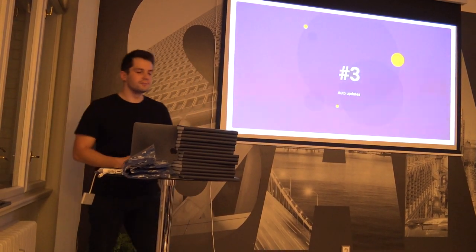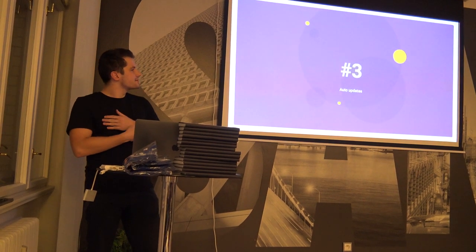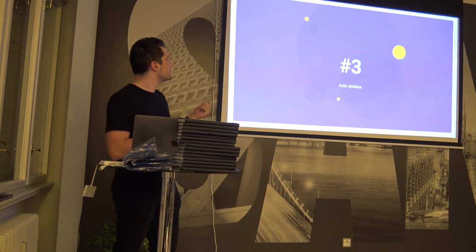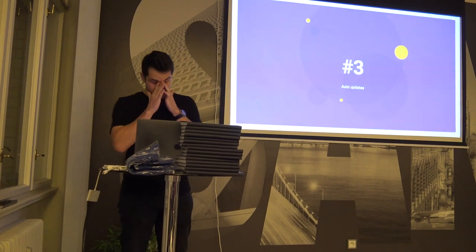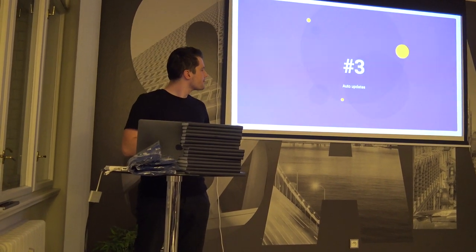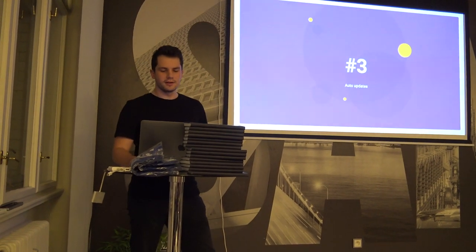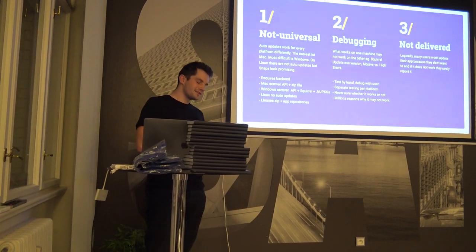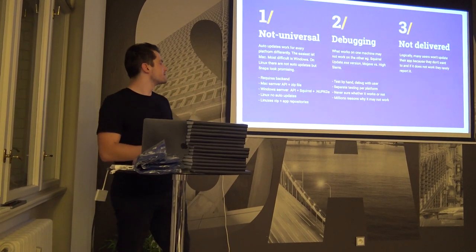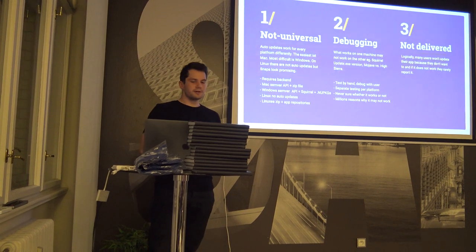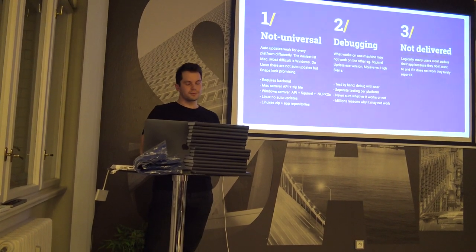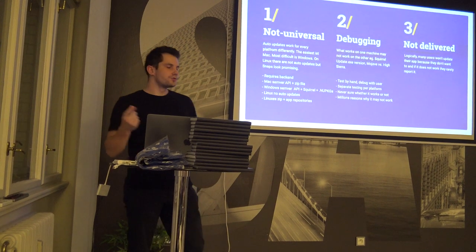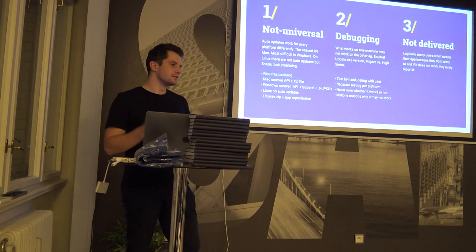Let's go to number three: auto-updates. I think auto-updates deserve to be spoken about on their own because there is a lot to cover, and I also wrote an article about how to make Windows auto-updates work on Electron — I think it's the most-read topic on our blog. The fundamental problem is that auto-updates are not universal. You can do auto-updates on only two platforms: Mac and Windows. Mac works okay — all you need is a server API in your backend that returns a URL to the zip file, and that's it: it downloads and replaces the old app.